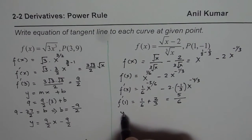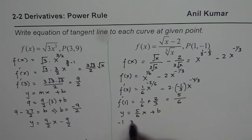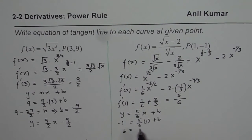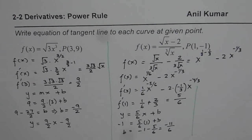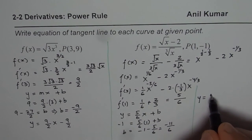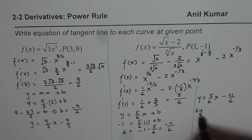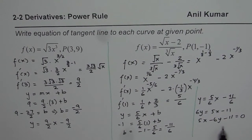Therefore, we write the equation of the line as y = (5/6)x + b. To find b, substitute the point (1, -1): -1 = (5/6)(1) + b, giving b = -1 - 5/6 = -11/6. So the equation of the tangent line is y = (5/6)x - 11/6. You could also write it in standard form by multiplying everything by 6: 6y = 5x - 11, or 5x - 6y - 11 = 0. That depends on what the question requires.